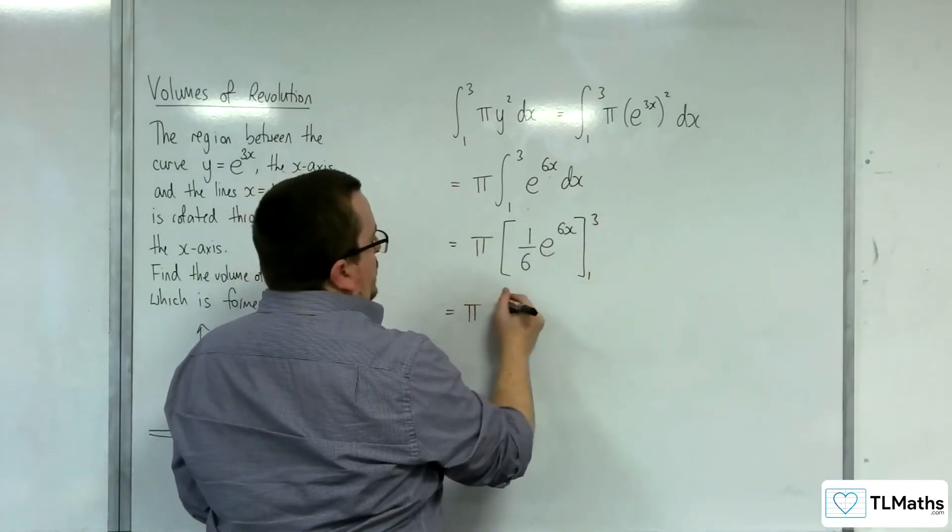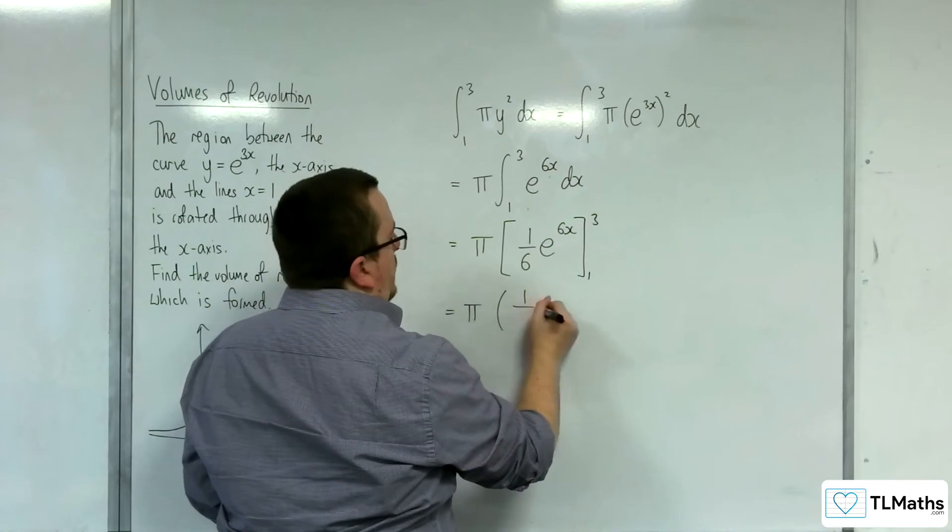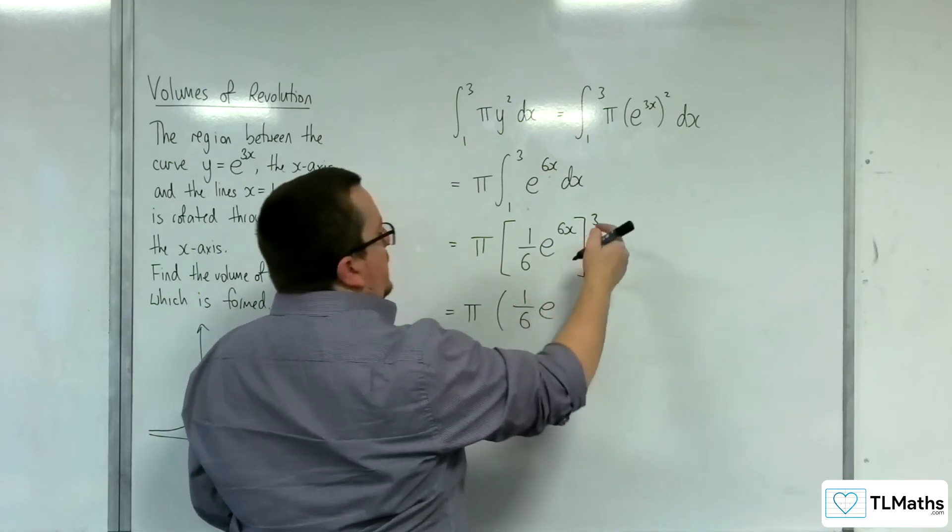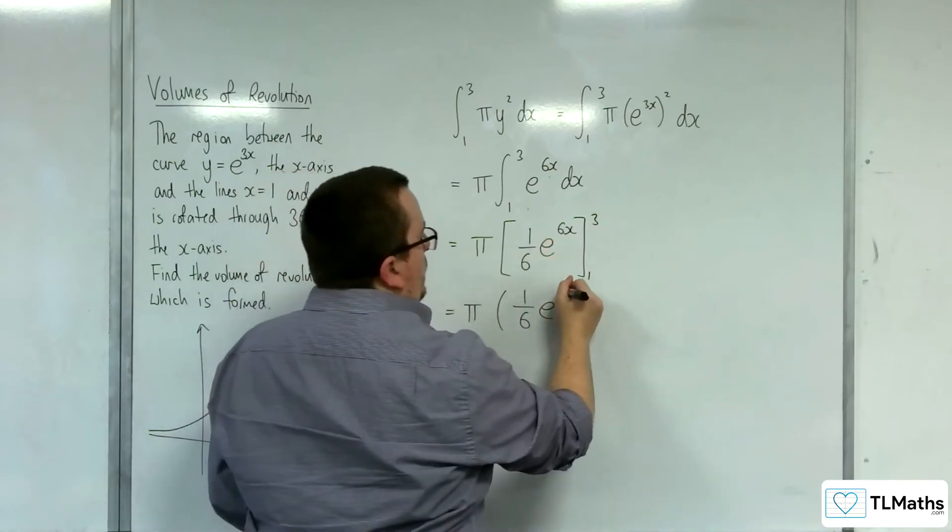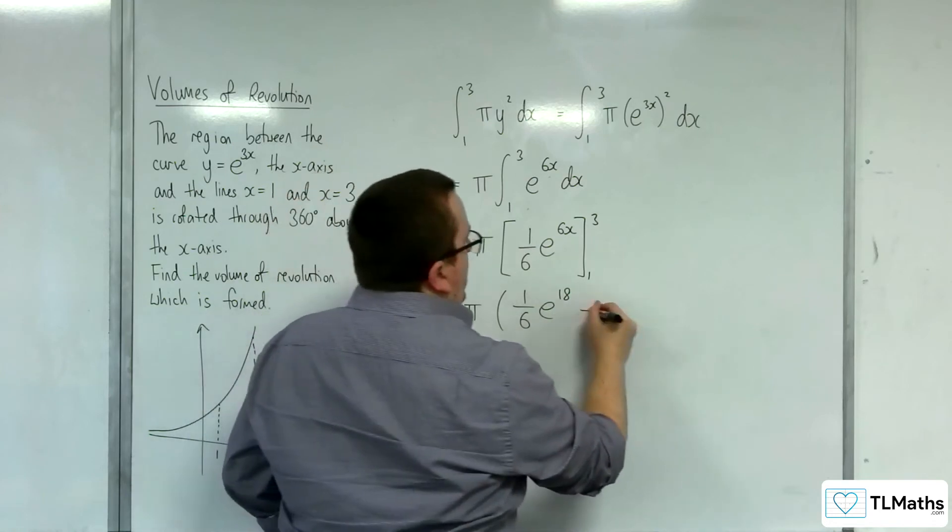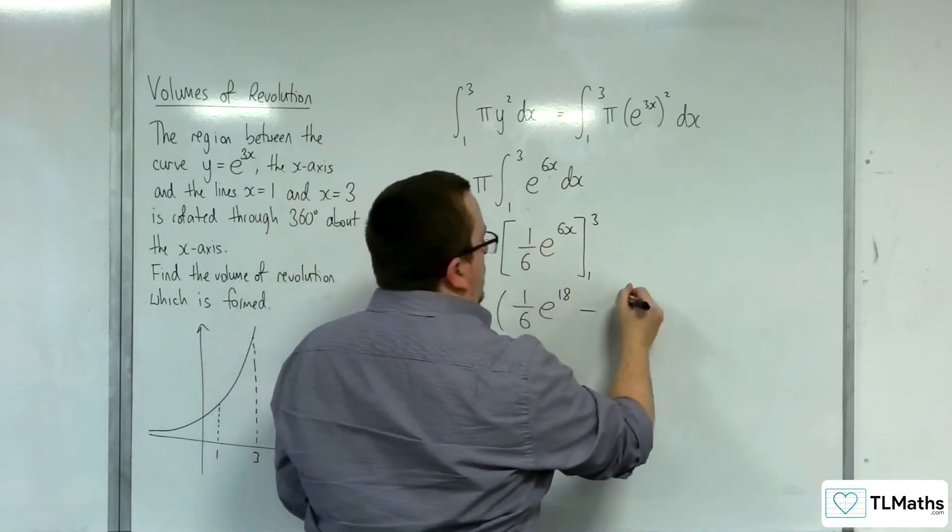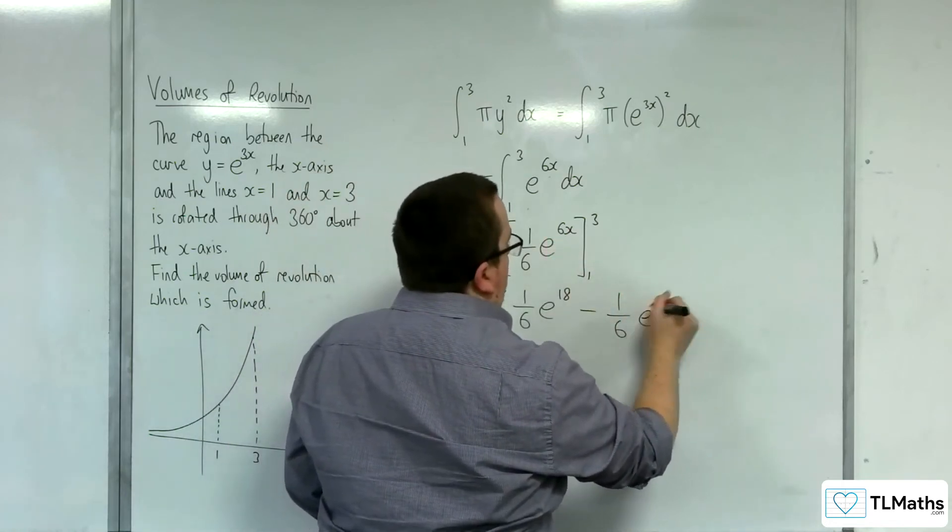And then I'm going to substitute in my limits. We're going to have one-sixth e to the power of 6 times 3, so 18, take away one-sixth e to the 6.